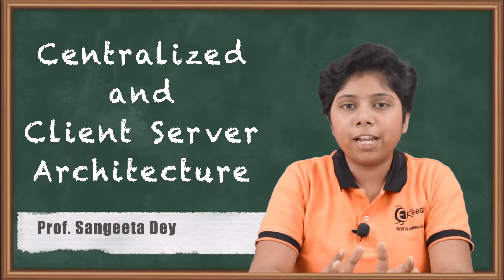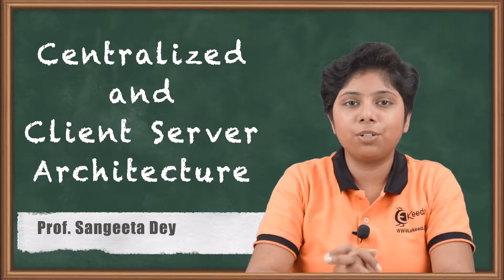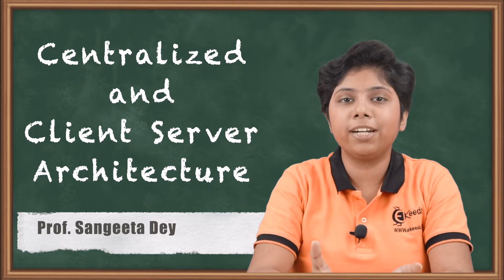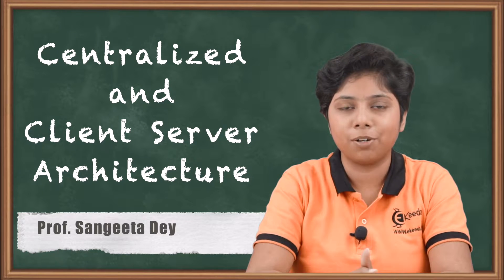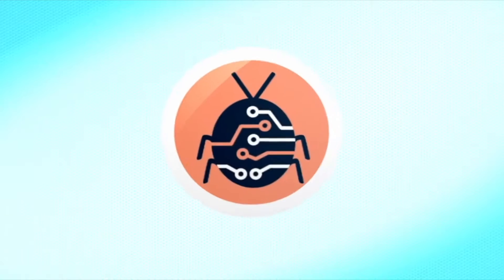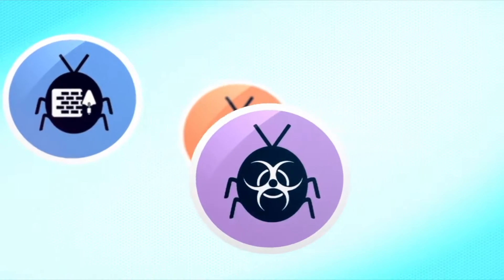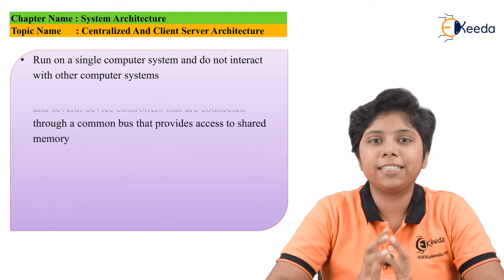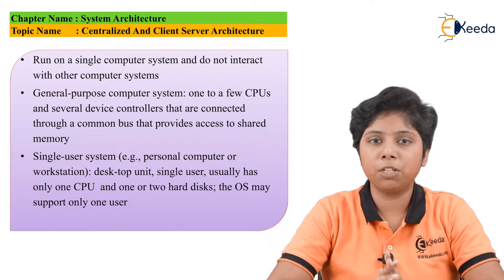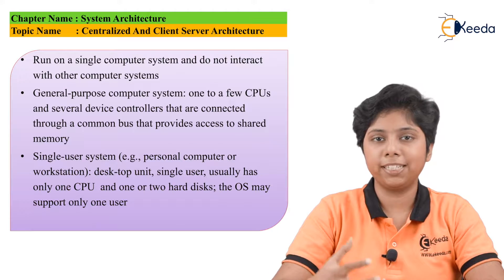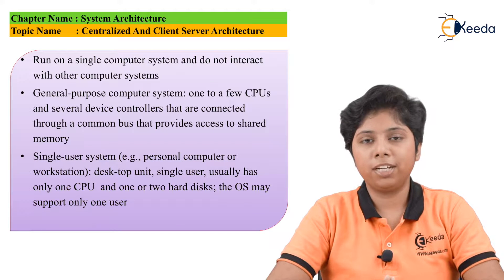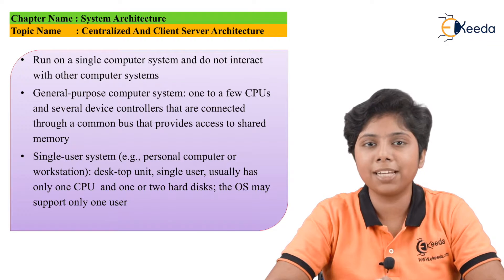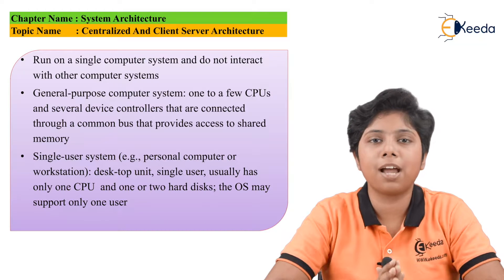Today we will talk about centralized architecture and client-server architecture. We will discuss the difference between these two and the trend of moving from centralized to client-server architecture. Architecture means the basic design of computing, and in terms of DBMS, it means how we are processing the database inside a computer. There are two broader categories for the architecture of accessing a DBMS: centralized and client-server.